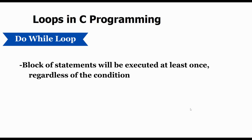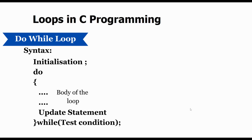The syntax for the do-while loop follows the same three basic steps. First is initialization — initialize the variable. Then we use a do keyword, and in the curly brackets we write the block of statements. At the end we update our variable. After the curly braces we mention a while keyword, and in the bracket we write our condition. At the very end there is a semicolon which indicates the termination.